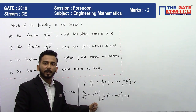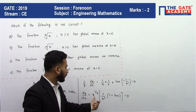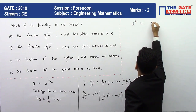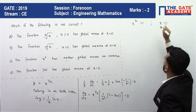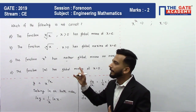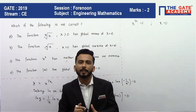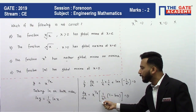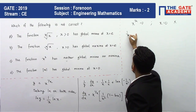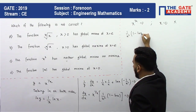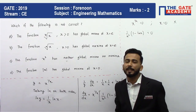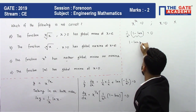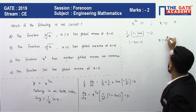Setting dy/dx = 0: the term x^(1/x) = 0 is satisfied at x = 0, but the domain requires x > 0, so that is excluded. Therefore we set (1 − ln x) = 0. Since 1/x² cannot be zero, we get ln x = 1, giving x = e as the stationary point.